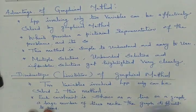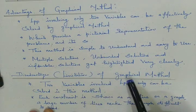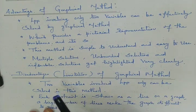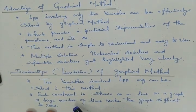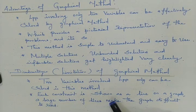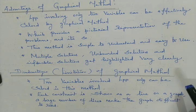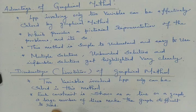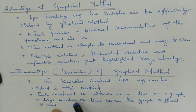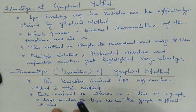At the same time, we have the disadvantage — or we can call it the limitations — of the graphical method. The first limitation is that in this graphical method we can solve only problems with two variables involved; that is the main disadvantage. Also, each constraint is shown as a line on a graph. However many constraints are involved in the problem, those constraints are converted into lines. A large number of lines makes the graph difficult to read — if more constraints are present, it is very difficult to plot the points in the graph. That is another disadvantage of the graphical method.